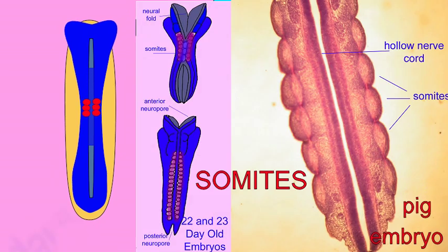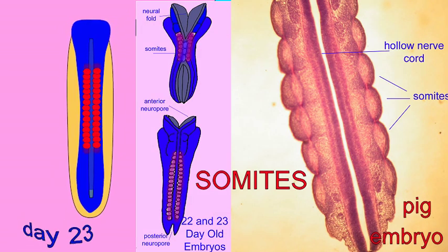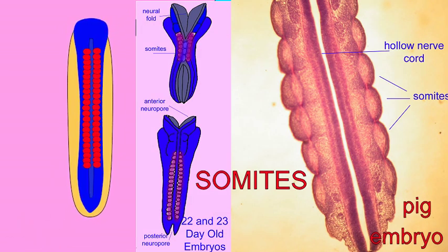By the third week of human embryonic development, there are about 38 pairs of cuboidal blocks of mesodermal tissue known as somites. By the fifth week, there are 42 to 44 pairs of somites. These somites will eventually produce most of the axial skeleton and skeletal muscles.